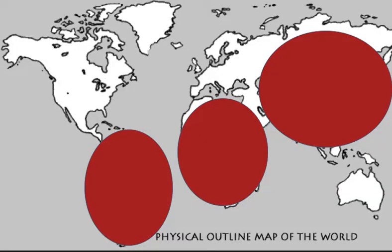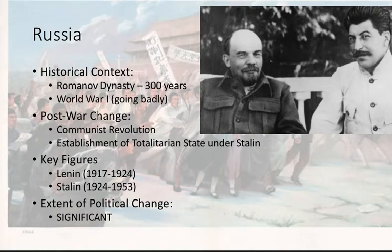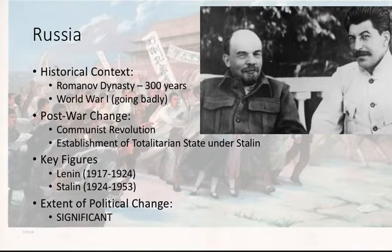Now let's move our focus from the West to the non-West. We're going to start in Russia because they're kind of in the middle of the West and the non-West, and they're probably the most important in the long run of all the changes that will occur after World War I. The historical context of Russia is 300 years of an autocratic Romanov dynasty — they had a czar that ruled much like a king, similar to an absolute monarchy. They enter World War I, but it goes very, very badly due to their slow industrialization, and as a result they look for ways out.